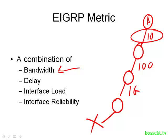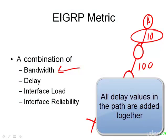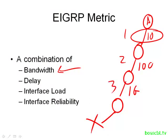Delay refers to the cumulative delay from the beginning to the destination. If this link had a delay of 1, this had a delay of 2, and a delay of 3, we would add all of these up and that would be our delay — so delay is cumulative, the total number. Interface load and interface reliability are no longer typically used when we run EIGRP, because if they're not used properly they can introduce a lot of instability. So we're going to ignore them, and it's actually recommended standard practice to not include interface load and interface reliability.